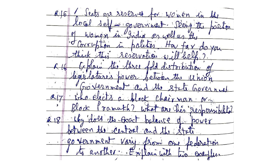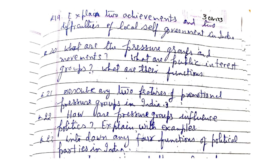Explain the three-fold distribution of legislative power between the Union Government and the State Government. Who elects a Block Chairman and what are his responsibilities? Why does the exact balance of power between the central and state government vary from one federation to another? Explain with two examples. Explain two achievements and two difficulties of local self-government in India.